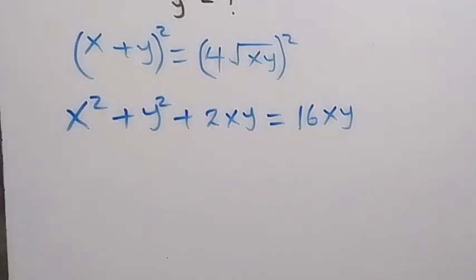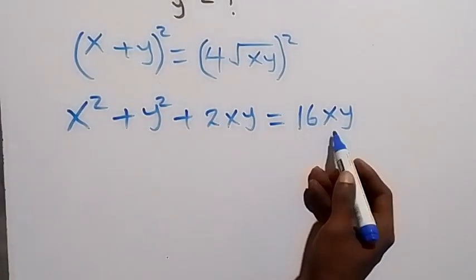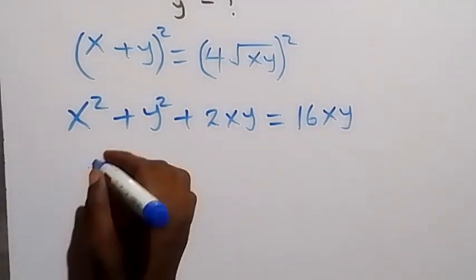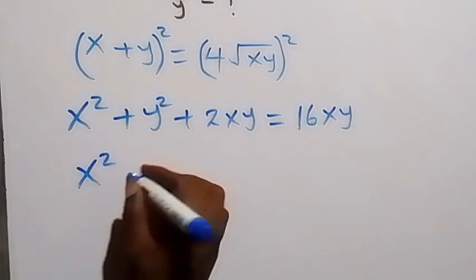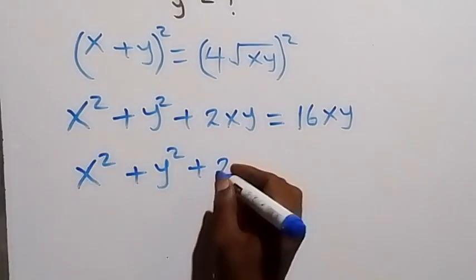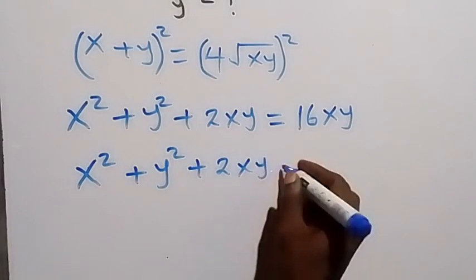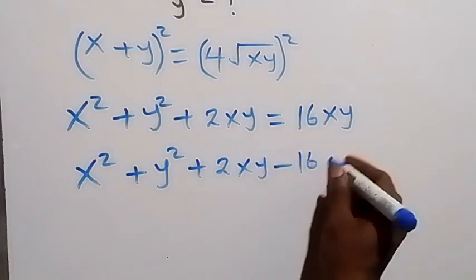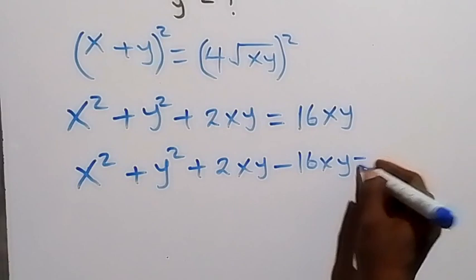Then in the next step, let's take 16xy to this side. And this becomes x squared plus y squared plus 2xy, then minus 16xy equals 0.